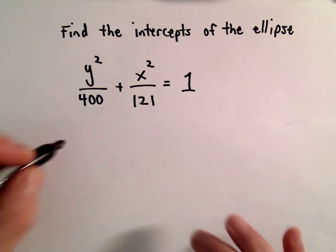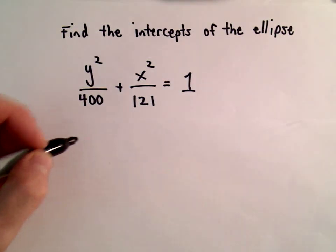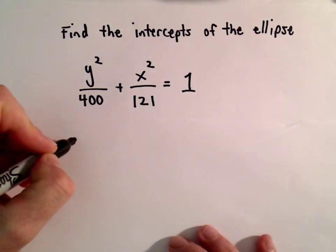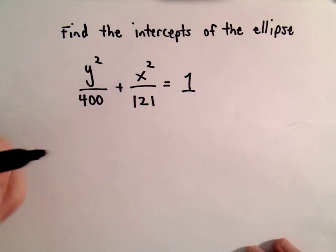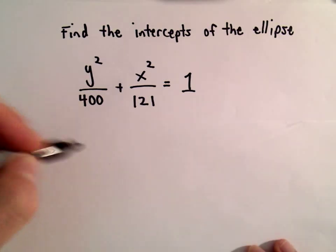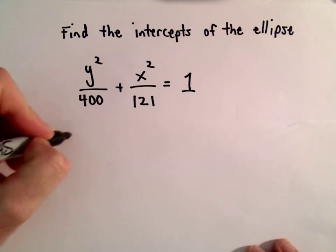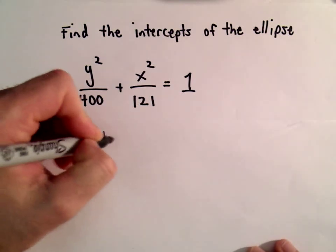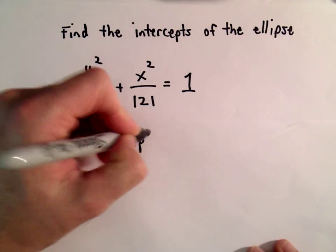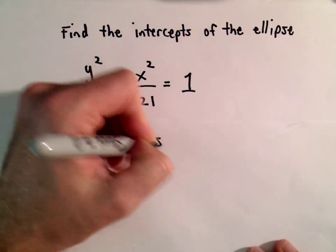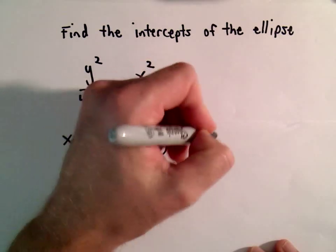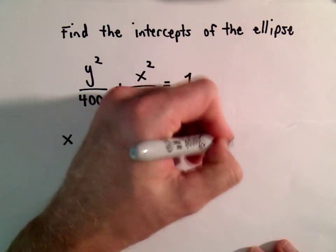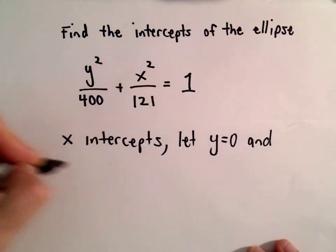I'm sure you've done this previously — finding intercepts of lines or parabolas — and it's always the same starting procedure. To find the x-intercepts, we simply let y equal 0 and solve for x.